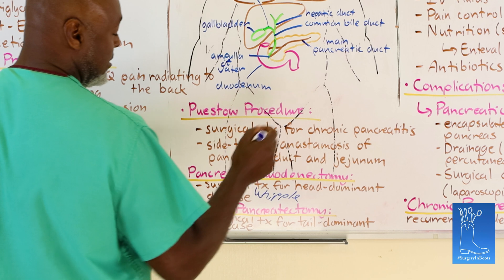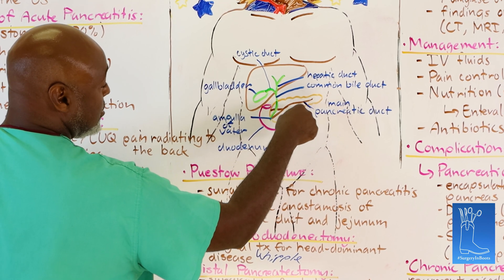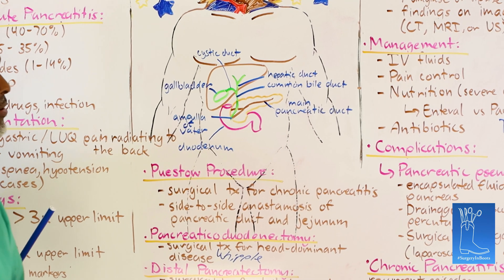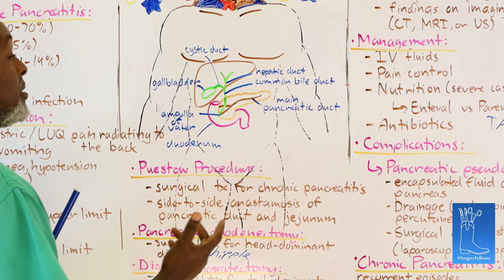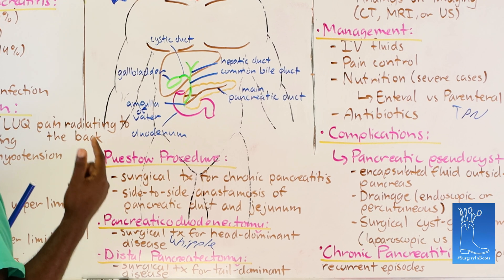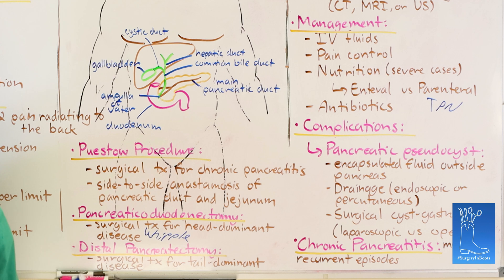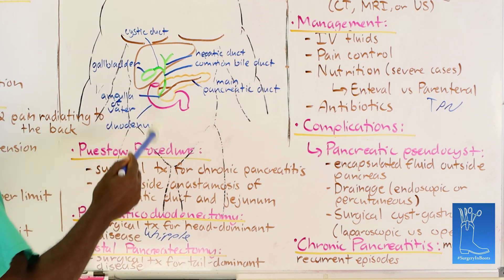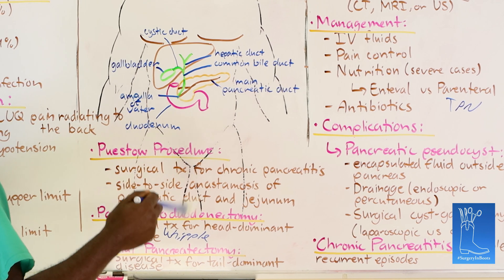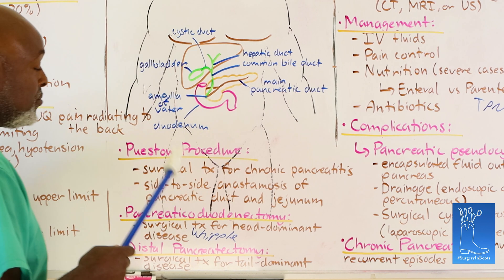If chronic pancreatitis or a pseudocyst is isolated to the distal pancreas, a distal pancreatectomy can be performed — sometimes with a splenectomy due to the arterial anatomy in that region. The problem with distal pancreatectomy in chronic pancreatitis is that the duct will still leak because it's chronic and inflamed. So again, we try to avoid all of this by getting patients' gallbladders out or getting them to stop drinking.